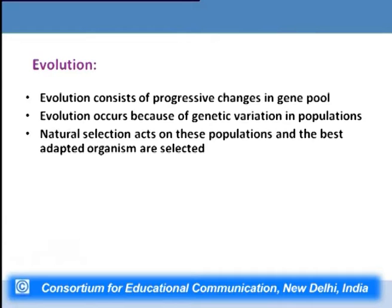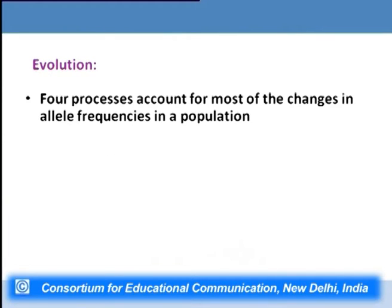Natural selection acts on populations that have genetic variation, and the best adapted organisms are selected. There are four processes which account for most of the changes in allele frequencies in a population. Any population can be said to be varying at a particular locus if it has different allele frequencies across different populations of that species.